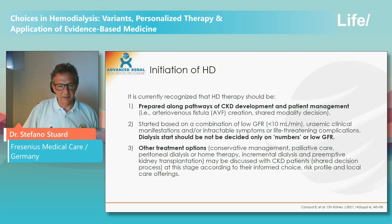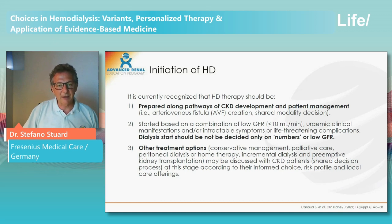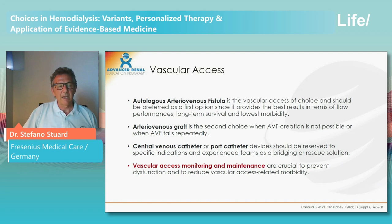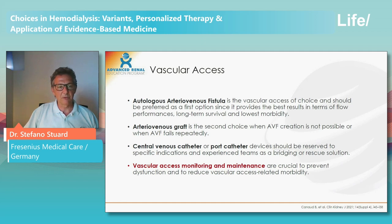Initiation of dialysis treatment: as mentioned, the decision to start should not be based only on a low GFR number — nephrologists must evaluate the patient according to their clinical condition. It should be mandatory that all patients starting hemodialysis begin with the right vascular access. There is no doubt that the arteriovenous fistula is the vascular access of choice, followed by arteriovenous graft, and then central venous or port catheters. Vascular access monitoring and maintenance are crucial to prevent dysfunction and reduce vascular access-related morbidity.